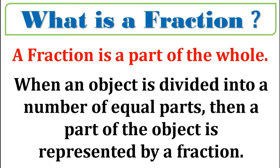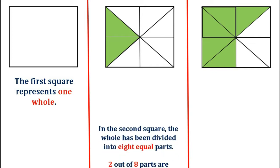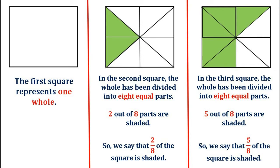Let us understand this concept with an example. Let us look at the three squares shown here. The first square represents one whole. The second square has been divided into eight equal parts. Out of the eight parts, two are shaded. So we can say that two by eight of the square is shaded. Similarly, in the third square the whole has been divided into eight equal parts, but out of the eight parts five parts are shaded.